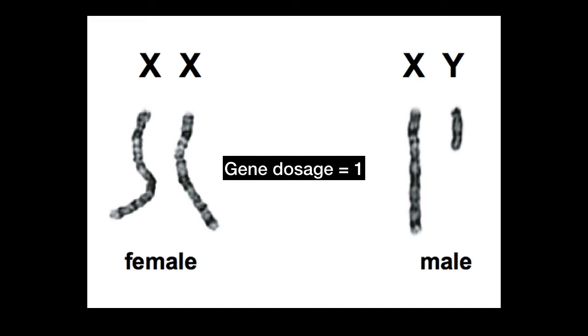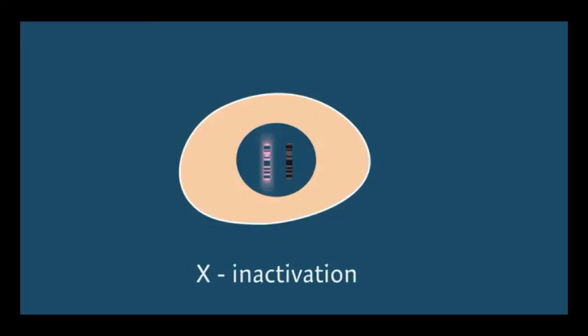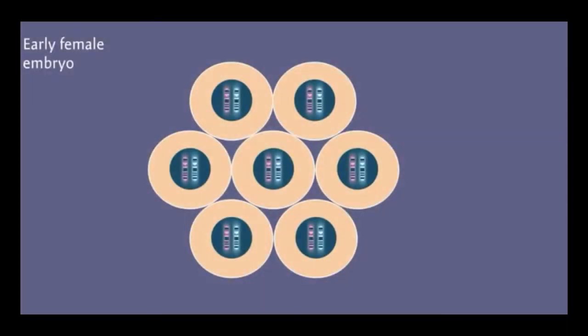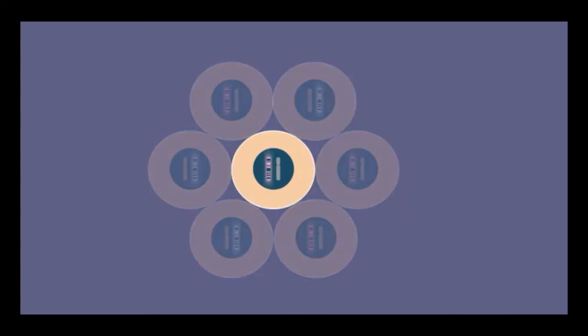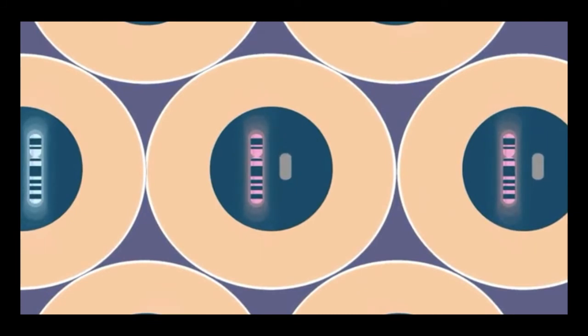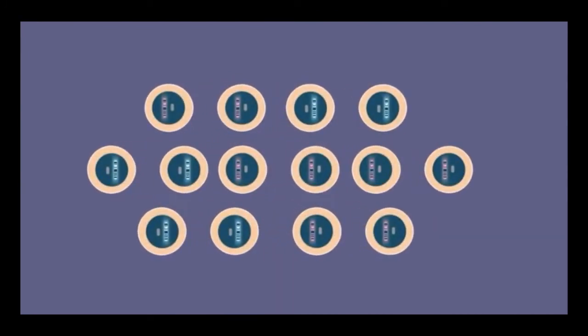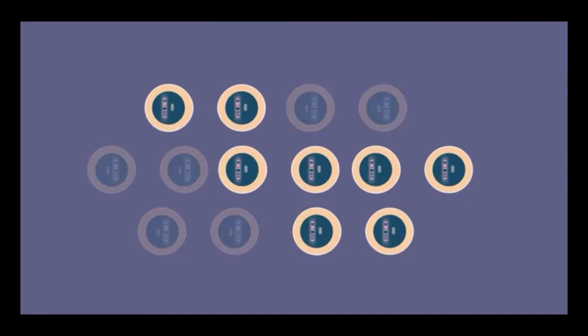So how can females survive with two copies of the X chromosome? The answer is X inactivation and Barr bodies. Early on in embryonic development in females, in every cell in that early embryo, one of the two X chromosomes is randomly chosen to stay active, while the second X chromosome becomes inactive. The choice is completely random, with some cells activating the maternal X chromosome and others activating the paternal X chromosome. The non-chosen X chromosome becomes a tiny, dense structure called a Barr body. When the embryonic cells undergo mitosis and divide, their Barr bodies and active X chromosomes divide with them.